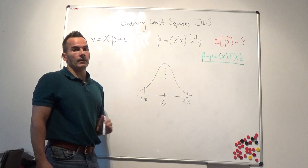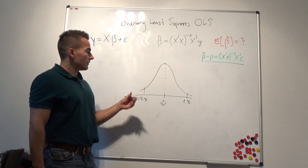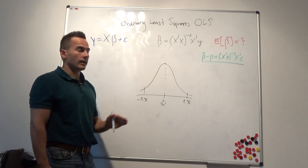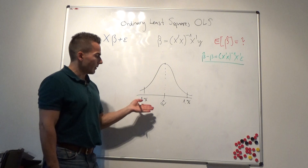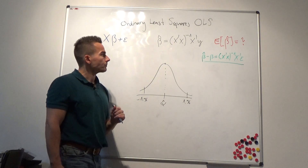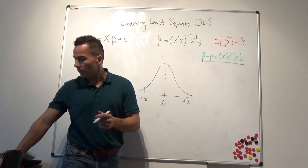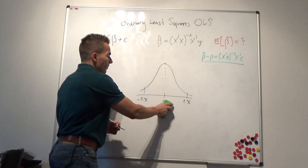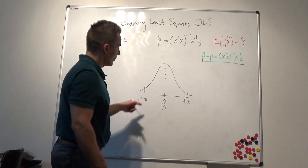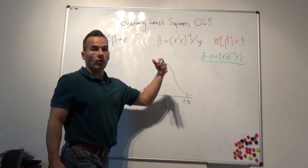Similarly, if the t-statistic falls below minus 1.96, we infer that our point estimator is statistically significant at the five percent level. The same is true for all of our other point estimators — all point estimators have a probability distribution. Our beta-hat also follows the same distribution, which is a normal distribution, at least according to our assumptions.